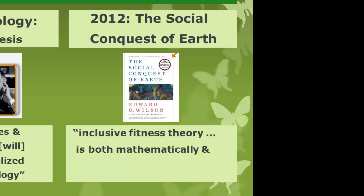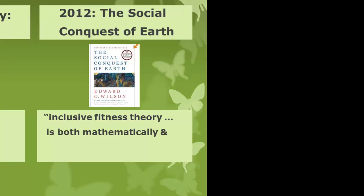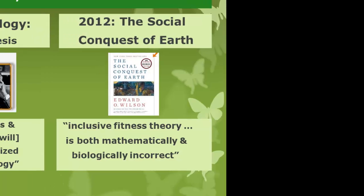Wilson says inclusive fitness theory is both mathematically and biologically incorrect. Now the uproar isn't among social scientists, but among evolutionary biologists, and many of them have very vigorously countered Wilson on this argument.